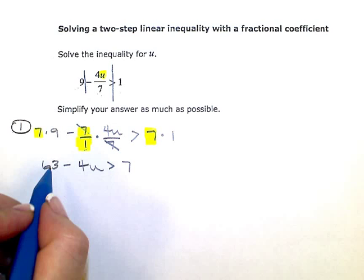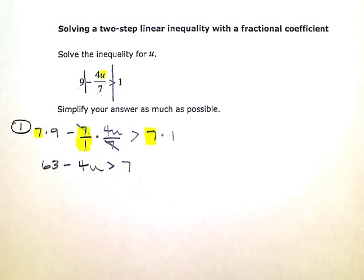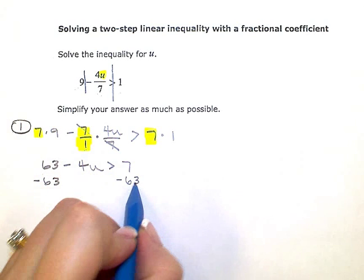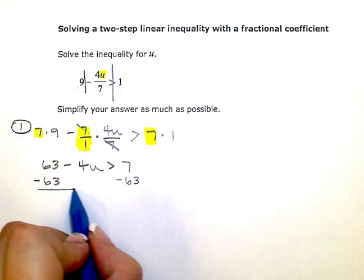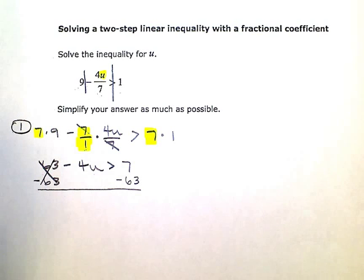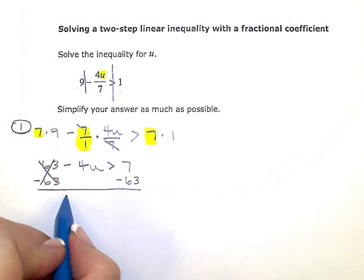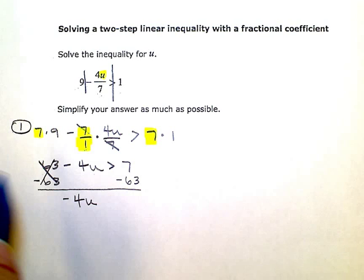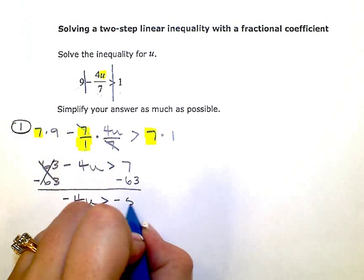To get the u by itself, I need to get rid of this constant term here. I'm going to subtract 63 from both sides of my inequality. I'm subtracting, not multiplying or dividing by a negative, so I don't need to flip my sign here. When I simplify, I'll have negative four u is greater than seven minus 63, which is negative 56.